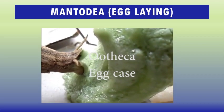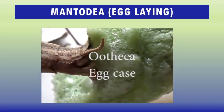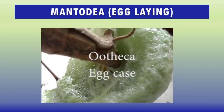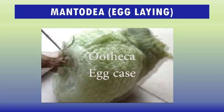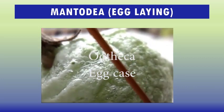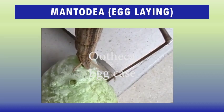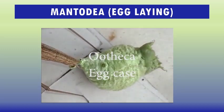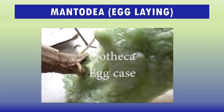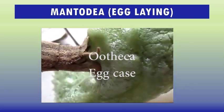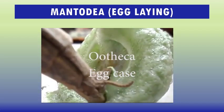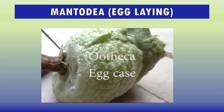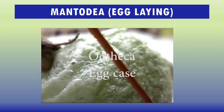For egg laying, the female lays between 10 to 400 eggs depending on the species. Eggs are typically deposited in a froth mass produced by glands in the abdomen. This froth mass hardens, creating a protective capsule which, together with the egg mass, is called an ootheca. The ootheca can be attached to a flat surface, wrapped around a plant, or deposited in the ground. Despite their durability, the eggs are often preyed on by parasitoid wasps. In some families such as Tarachodidae, the mother guards the eggs.